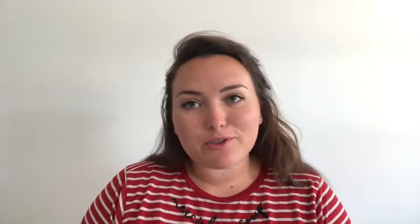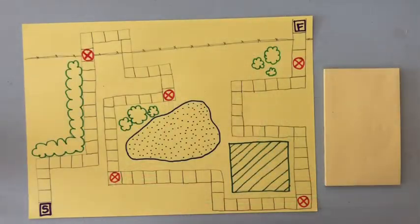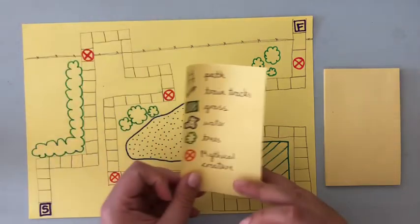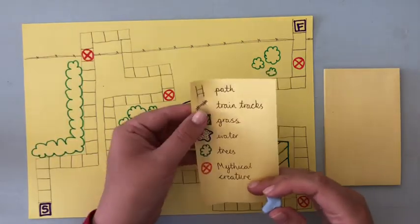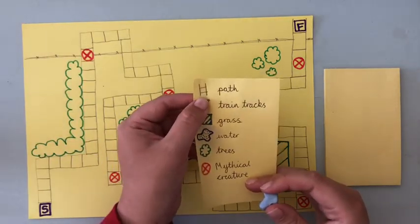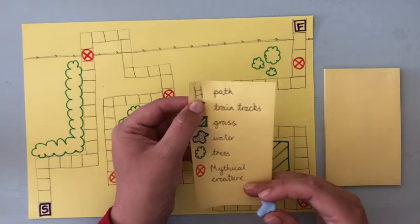Today we're going to think about how we can direct ourselves through our map, and we're going to have a go at writing a set of instructions. Here is my map from yesterday. What I've done is I've made squares on my path and added it to my key, so you can see I've changed my key to match my map.